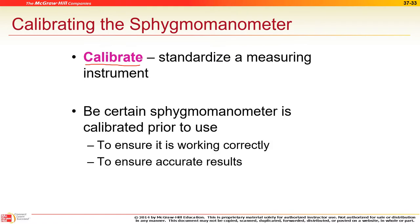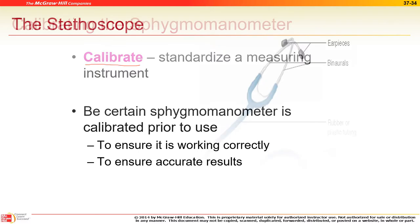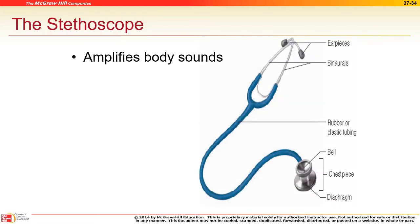Stethoscopes amplify sounds and have a bell and a diaphragm. The diaphragm is for low-pitch sounds; the bell is for high-pitch sounds. For chest sounds you use the larger diaphragm end, but for high-pitch sounds like intestinal sounds — the whooshing of fluids and gas through intestines — you'd use the bell.